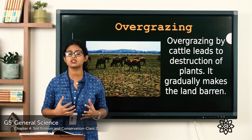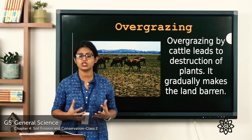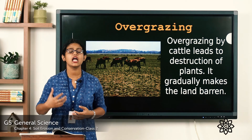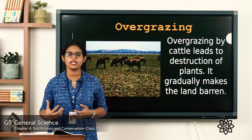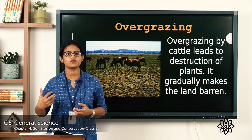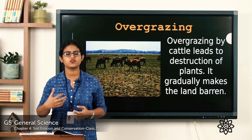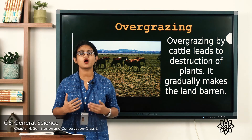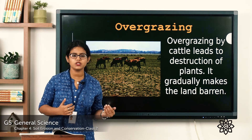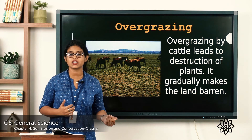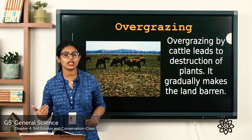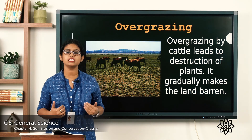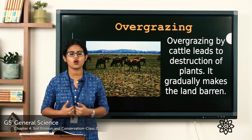So to summarize today's lesson: soil erosion is a process by which the top layer of the soil — the fertile, outermost layer where plants grow — is washed away by flowing water or blown away by wind. Its causes include natural agents such as wind and water, and human activities such as deforestation and overgrazing.